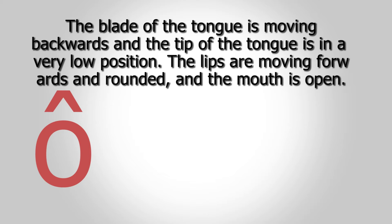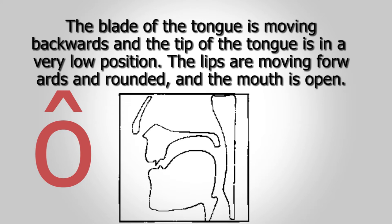Ô is a mid-back and rounded vowel. The blade of the tongue is moving backwards and the tip of the tongue is in a very low position. The lips are moving forward and rounded and the mouth is open.